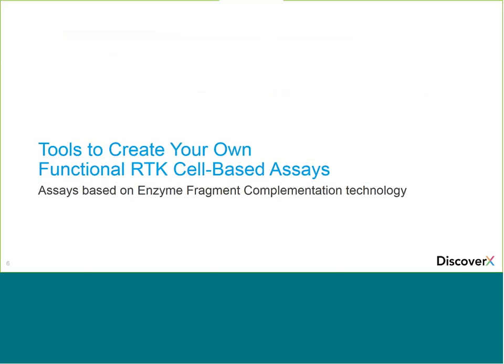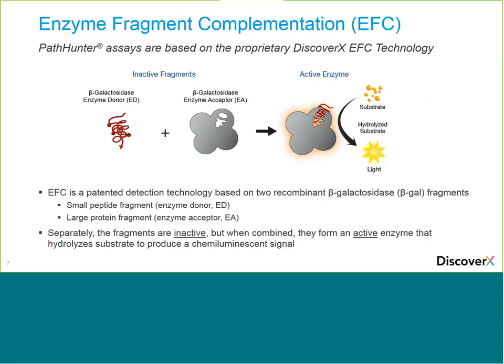Now let's move into the tools needed to create your own functional cell-based assay. These assays are based on our EFC technology, or enzyme fragment complementation. It's a simple system based on a beta-galactosidase enzyme split into two fragments: a small enzyme donor (ED) of roughly 40 amino acids, and the larger enzyme acceptor (EA). When apart they're inactive; when brought together they complement and form active beta-galactosidase, which in the presence of substrate produces a chemiluminescent signal you can read in any standard luminometer to generate a dose-response curve.